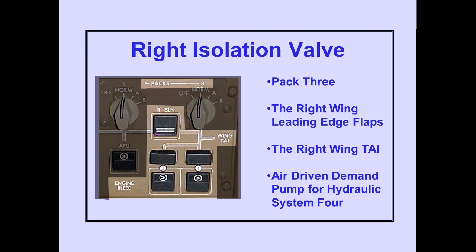With both the left and the right isolation valve closed, pack three, the right wing leading edge flaps, the right wing thermal anti-ice duct, and the air-driven demand pump for hydraulic system four are isolated from the rest of the duct system.